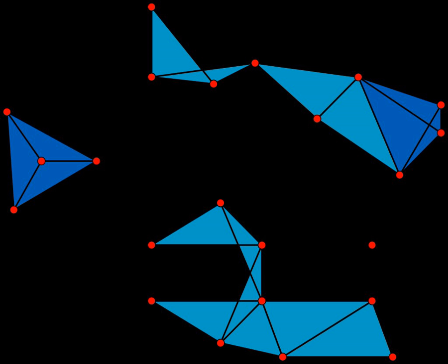A chordal graph is a graph whose vertices can be ordered into a perfect elimination ordering, an ordering such that the neighbors of each vertex v that come later than v in the ordering form a clique.